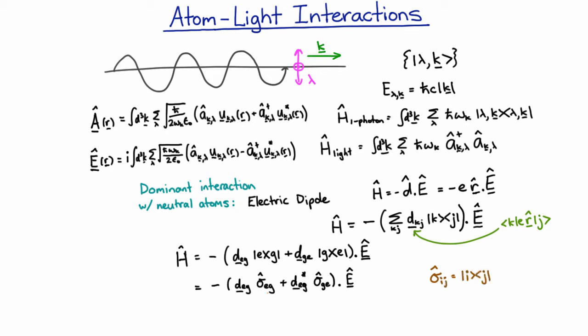There's something a little bit surprising here. Here we have a transition from a ground state to an excited state. And here we have a transition from an excited state to a ground state. And we're taking the dot product with the electric field operator. And the electric field operator has annihilation operators for photons and creation operators for photons.